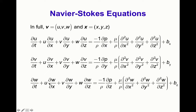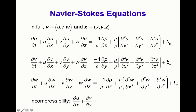Finally, in the z-direction: del w / del t plus partial derivatives of w with respect to x, y, and z equals minus the pressure gradient in z plus (mu/rho) times the Laplacian of the z-component of velocity. In addition, the incompressibility equation from conservation of mass gives del u / del x + del v / del y + del w / del z equals zero.